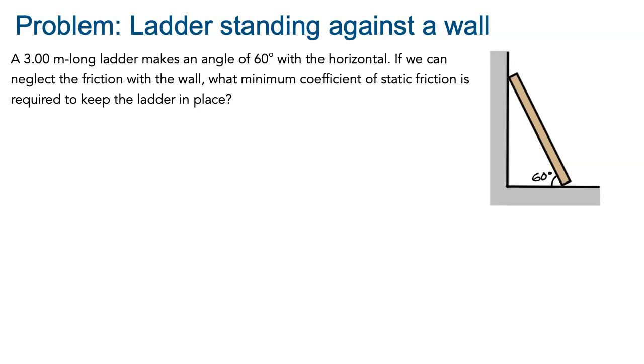Whenever you approach this kind of problem, the first thing to do is identify the object in question. What object do you want to study? I guess that just by the title of the problem, you probably guessed that the object we're interested in is actually the ladder. Once you have that, the next thing is to identify all the forces acting on your ladder and then draw a free body diagram.